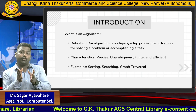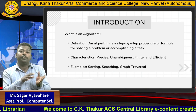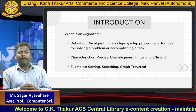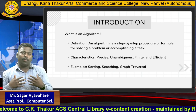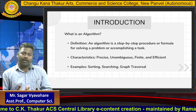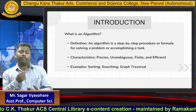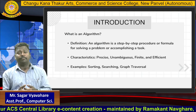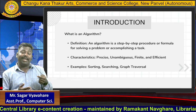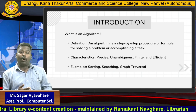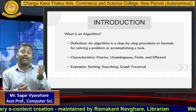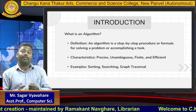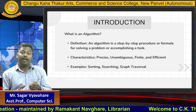Precise means it should be understood by everyone — it should be concise and easy to understand. Unambiguous means that when we are designing an algorithm and writing steps to solve a problem, there should not be any confusion.